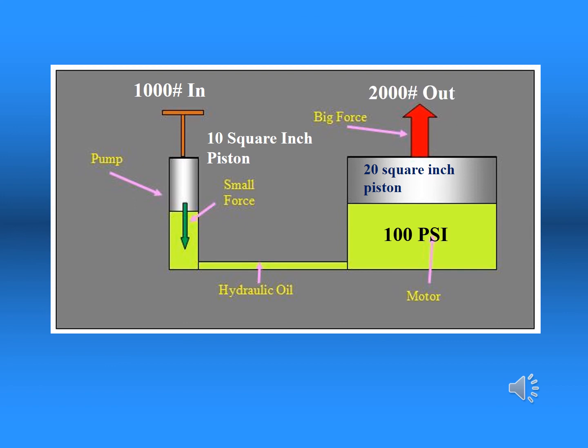This illustration demonstrates how force is multiplied in a fluid power system. At the input piston on the left, we apply 1,000 pounds of force, which is transmitted to the piston whose area measures 10 square inches. This generates a pressure of 100 psi, which in turn applies its force to the 20 square inch piston, producing an output force of 2,000 pounds. It's important to remember that pressure is multiplied times the area to calculate the force.